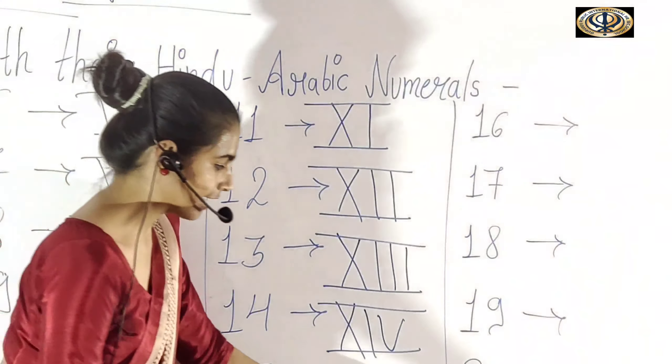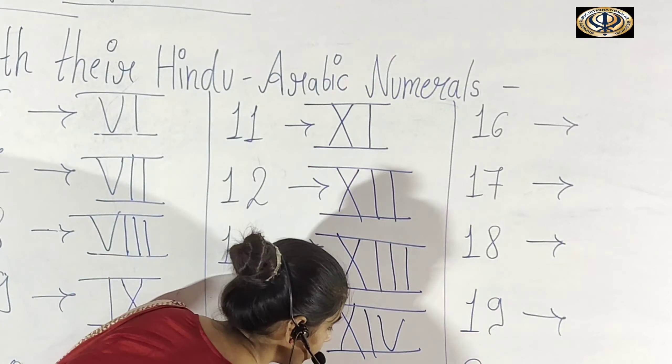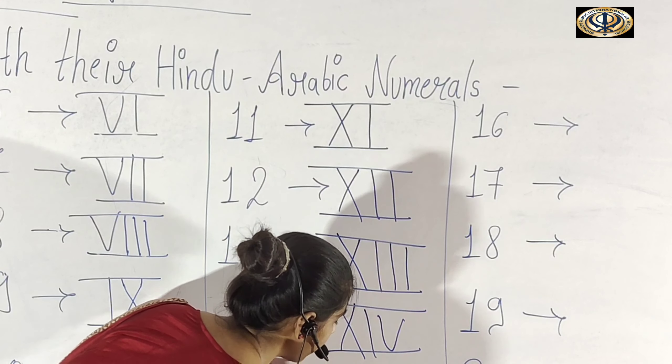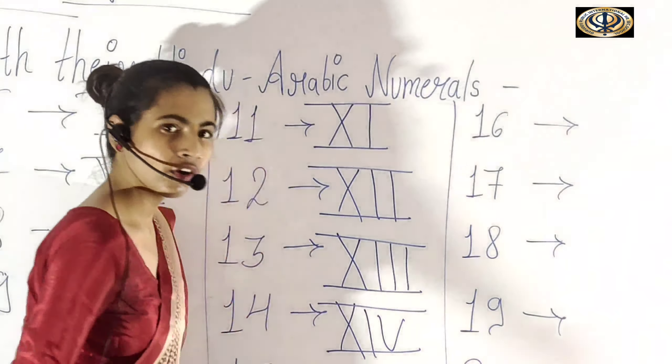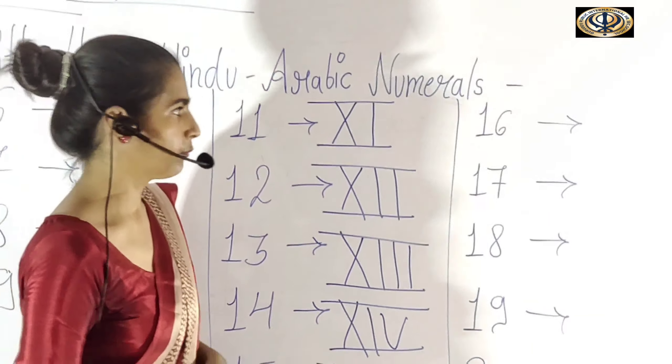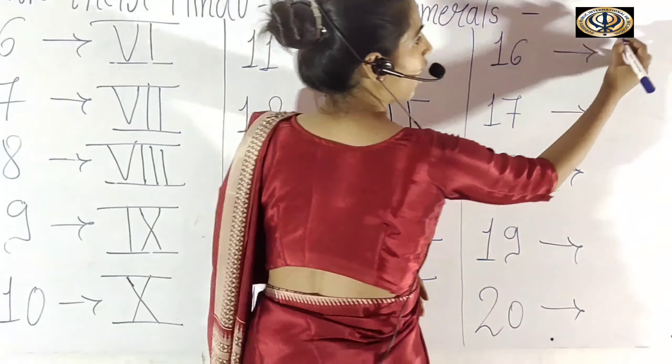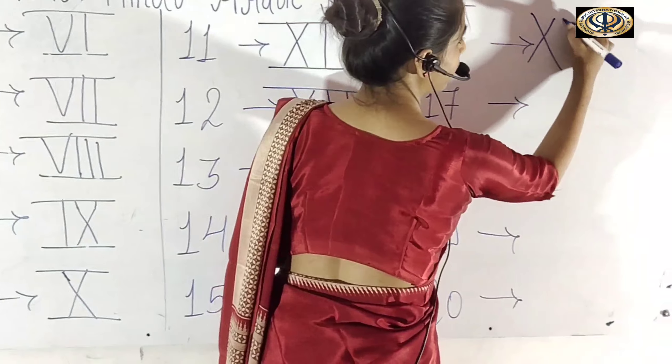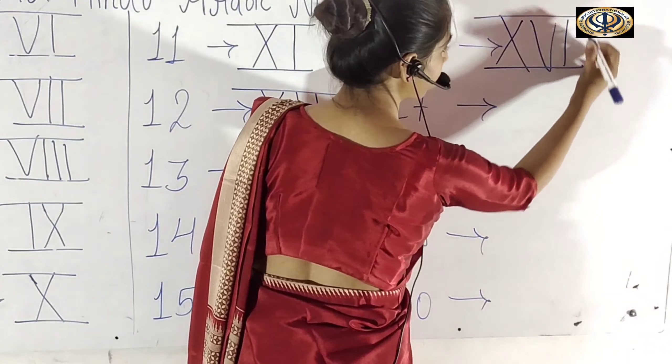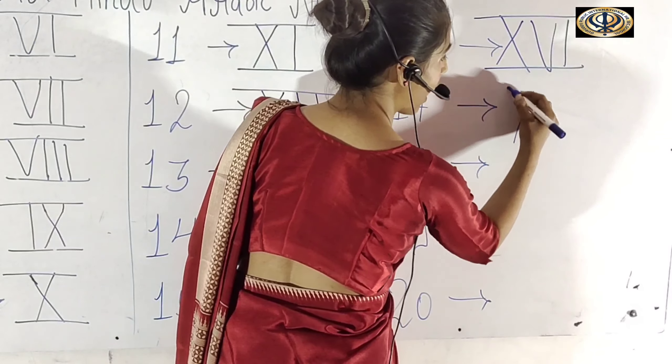XV — so kiska Roman number ho gaya? 15 ka Roman number hai XV. Aur 16 ka Roman number ho gaya XVI.